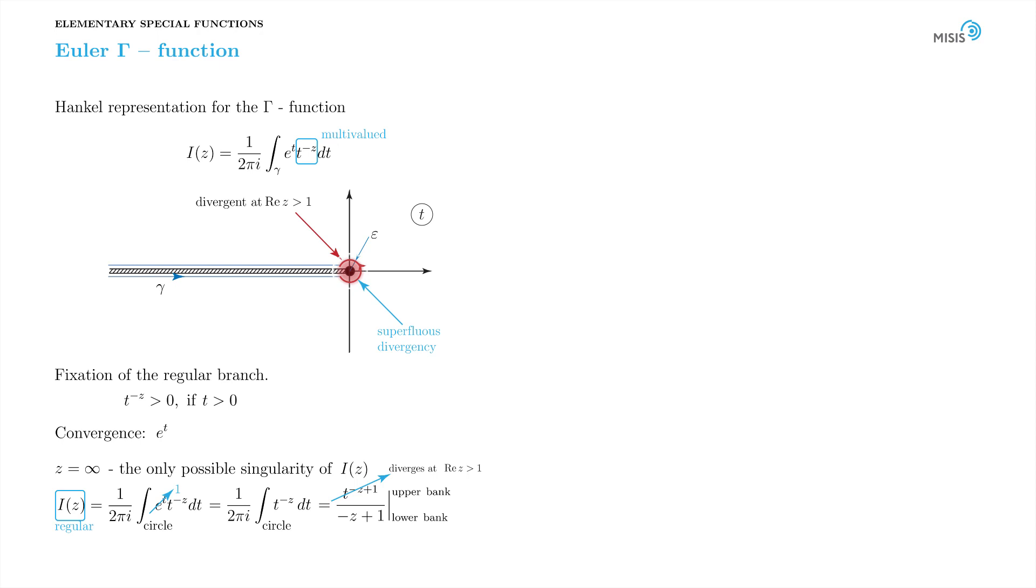So when computing the integral, we assume that real part of z is smaller than 1 and the integral is going to converge. But the answer will hold for all finite z. And this assumption should be lifted at the end of the calculation.